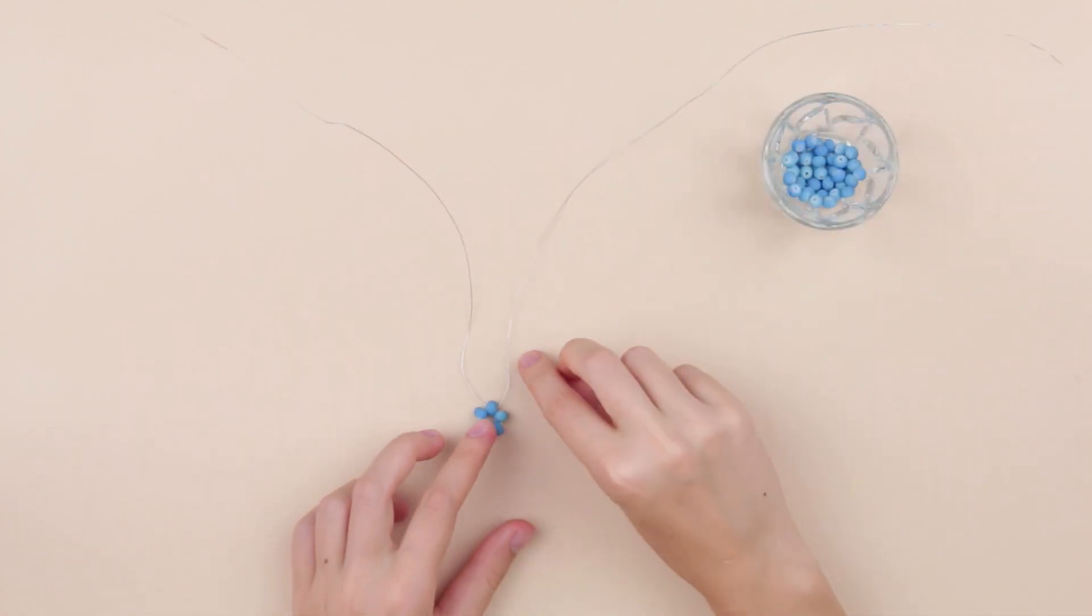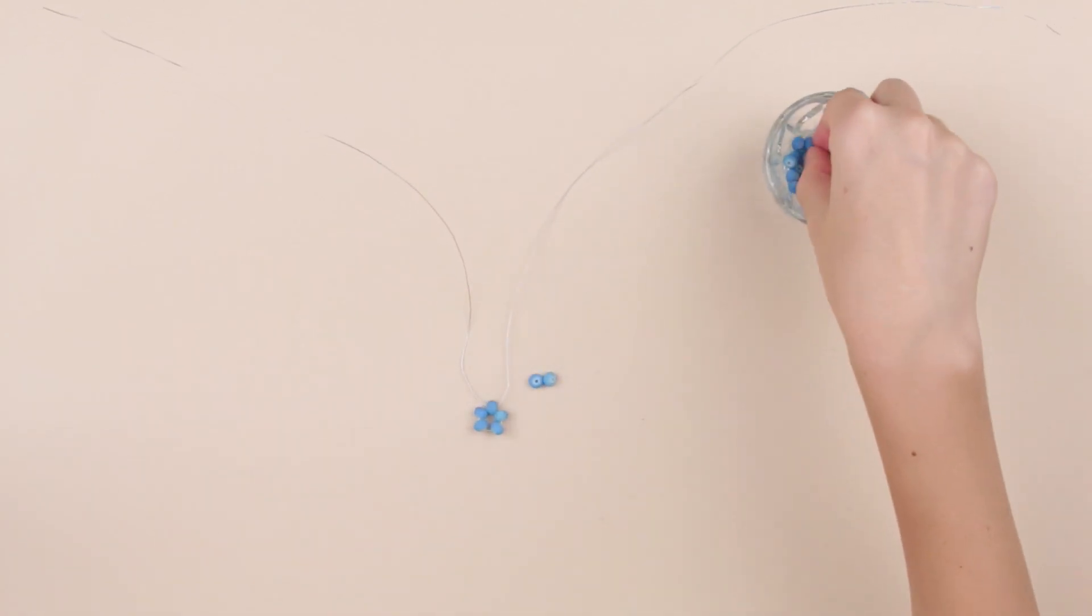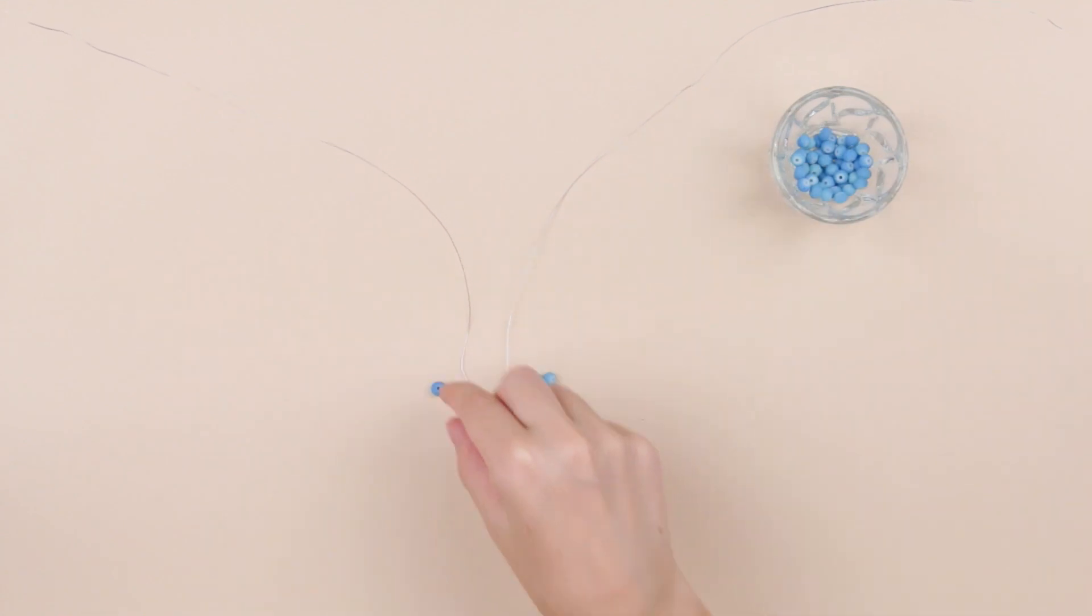Thread two beads on one wire end, the right one in this case, and one bead on the other, the left one.